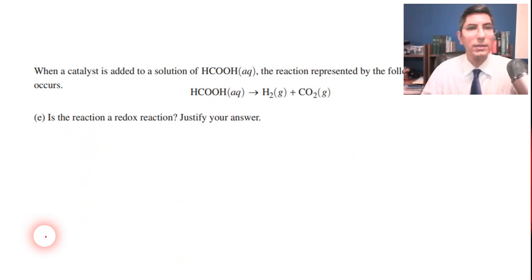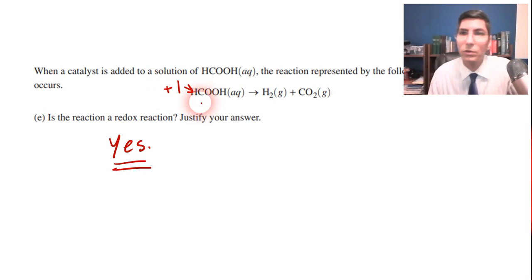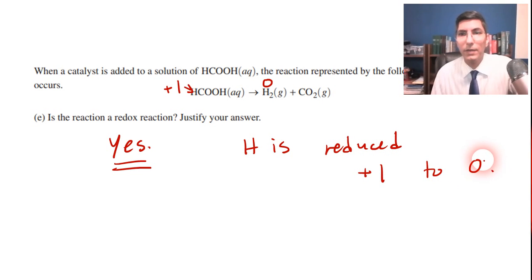Let's go on to part E. We're going to have a catalyst added to a solution of methanoic acid. And the reaction is represented by that equation right there. Is this a redox reaction? When you look at that, I hope you realize that is a yes. That is a big yes. Because the H, this H hydrogen right here has a plus one charge. That's its oxidation number. And over here, hydrogen in its elemental form is going to be zero. So that tells me that hydrogen is reduced. It starts out at a plus one, and it ends up at a zero.